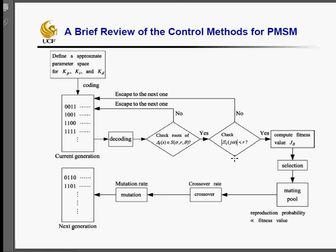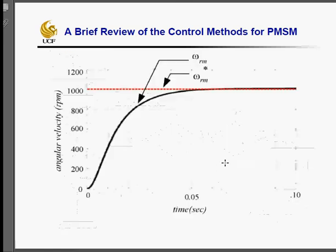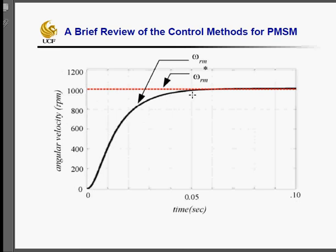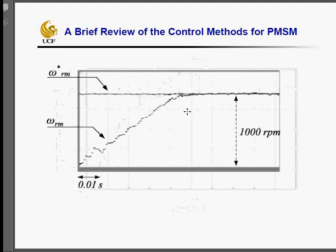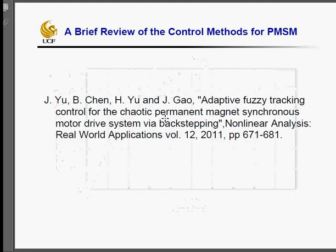They apply the parameters to the simulation model and get the response in this figure. We can see the angular velocity could follow the desired trajectory in very fast speed, in less than 0.1 seconds. This is their experiment result, and the result is even much better than the simulation result.